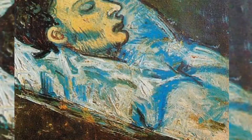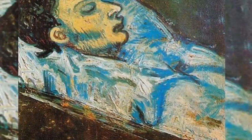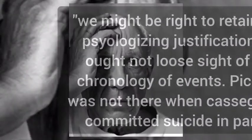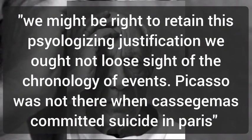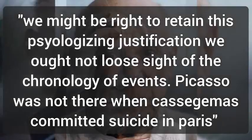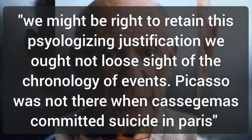Picasso was influenced by a journey through Spain and by the suicide of his friend Carlos Casagemas, who took his life at the Lipidrome Café in Paris, France, by shooting himself in the right temple on February 17, 1901. Although Picasso himself later recalled, "I started painting in blue when I learned of Casagemas's death," art historian Helene Sekel has written that while we might be right to retain this psychologizing justification, we ought not lose sight of the chronology of events — Picasso was not there when Casagemas committed suicide in Paris.